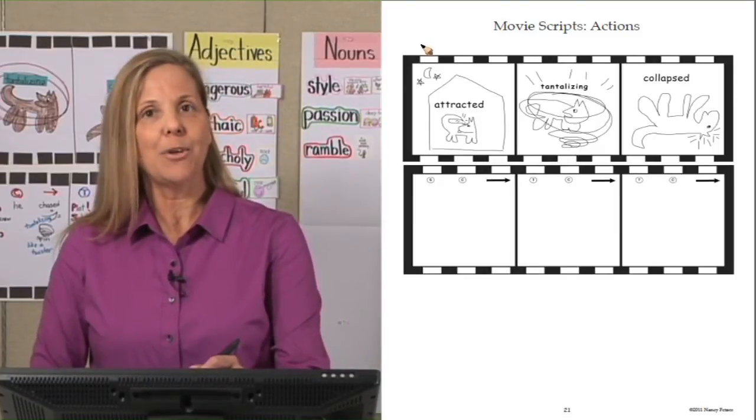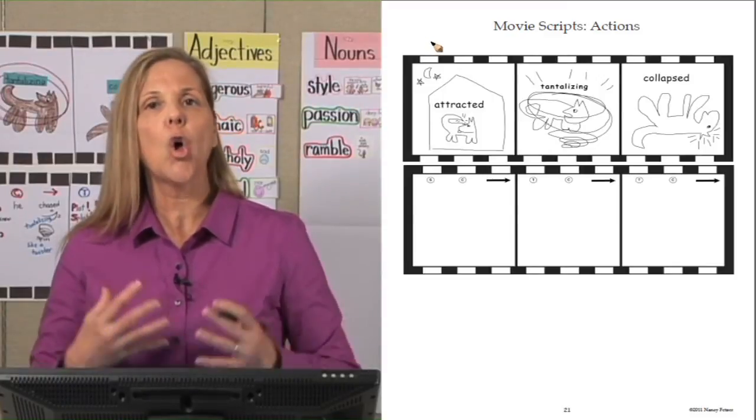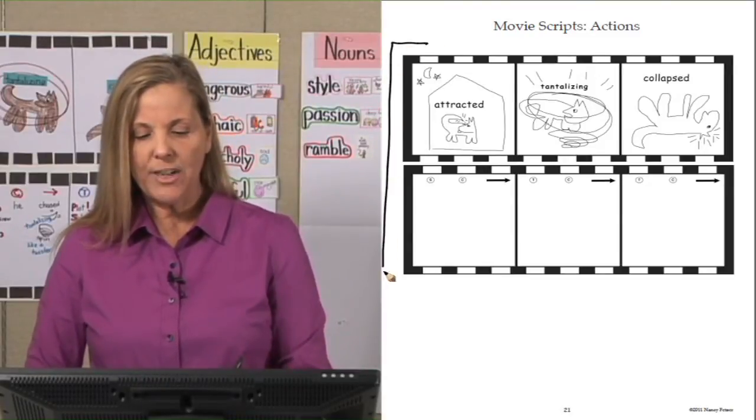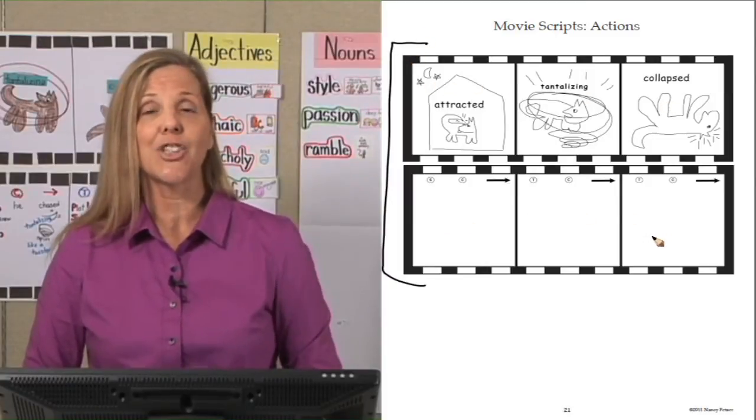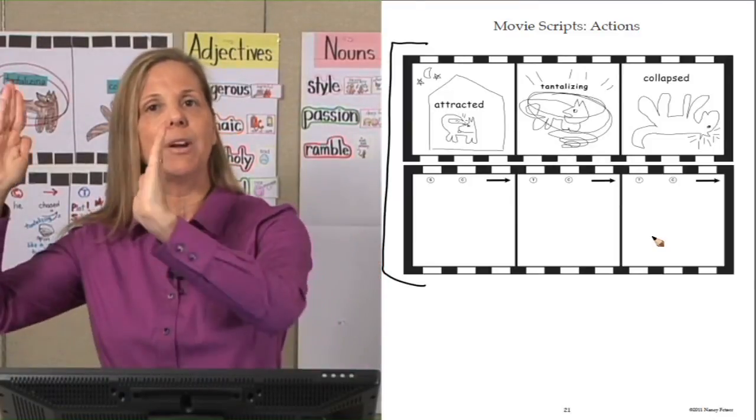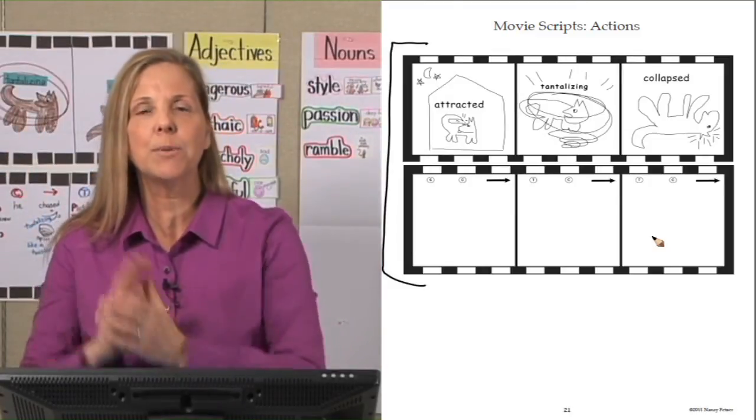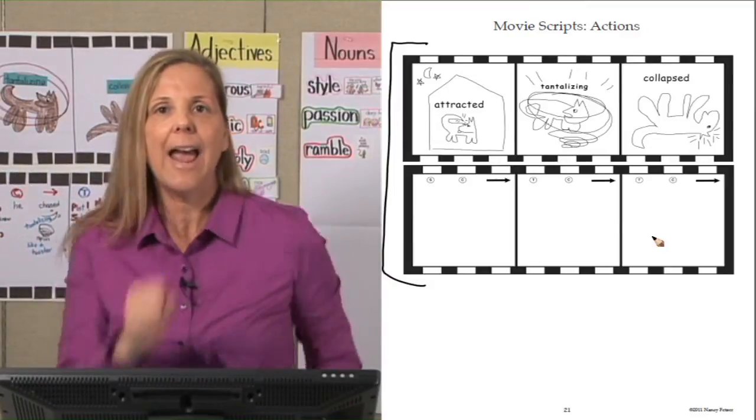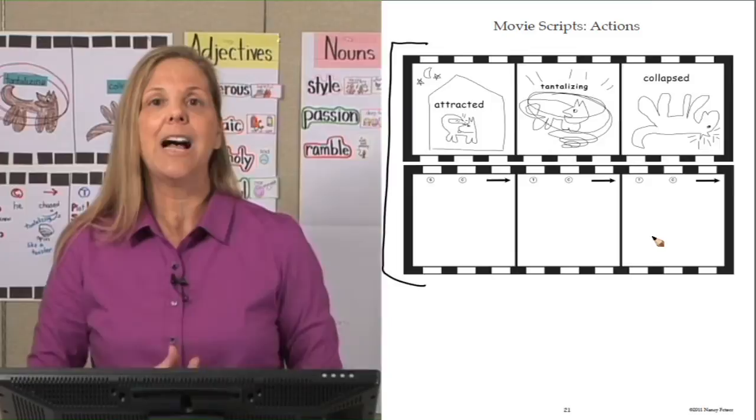The children have a movie script and so do you. Now you need to tell them why they're doing this activity. We always start by giving a purpose. So I tell the children, boys and girls, look at your movie script. You have a top section with three pictures and then a bottom section. Put your hands together like this and say, from Hollywood, it's movie script time. And every movie has a beginning, middle, end. And what are we going to learn when we write movie scripts? How to write a great story opening and then how to write actions. So that we have powerful sentences in a beginning, middle, end of a movie.